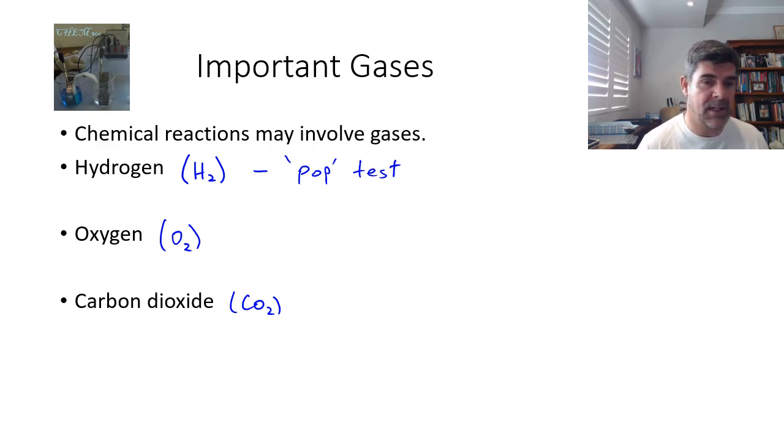For oxygen, we use the glowing splint. So if we set a little piece of wood on fire, make sure that a section of it is glowing and blow out the flame, if you put it into the oxygen, it will relight that flame. Oxygen is obviously one of the important components of burning or combustion reactions.